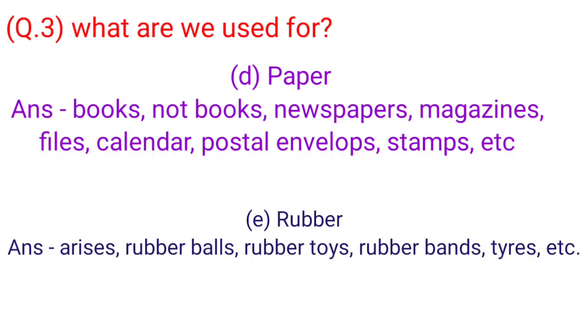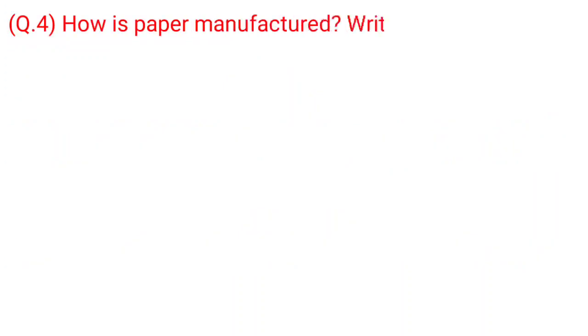E. Rubber — Eraser, rubber balls, rubber toys, rubber bands, tires, etc. Question 4: How is paper manufactured?